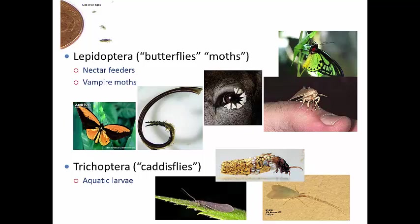Most Lepidopterans will feed on nectar. They have these siphoning mouthparts made from the maxillae — these extended maxillary portions. And they have pollinating abilities because of that, so they are great pollinators.